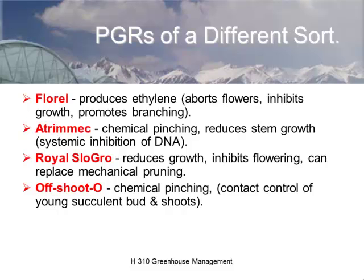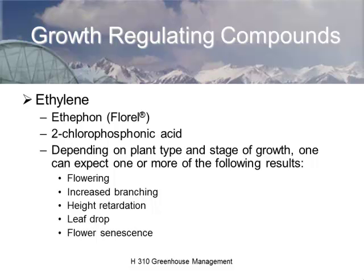Another group of plant growth regulators used extensively in greenhouses are those that reduce plant height. Common ones include Florel, which is a compound that produces ethylene; Atrimec, a chemical pinching agent that reduces stem growth; and Off-Shoot-O, another chemical pinching agent that acts more like a soap killing the apical meristem. The idea with these chemical pinching agents was to eliminate the need for physical shearing or pruning. Royal Slow Grow is an old plant growth retardant.